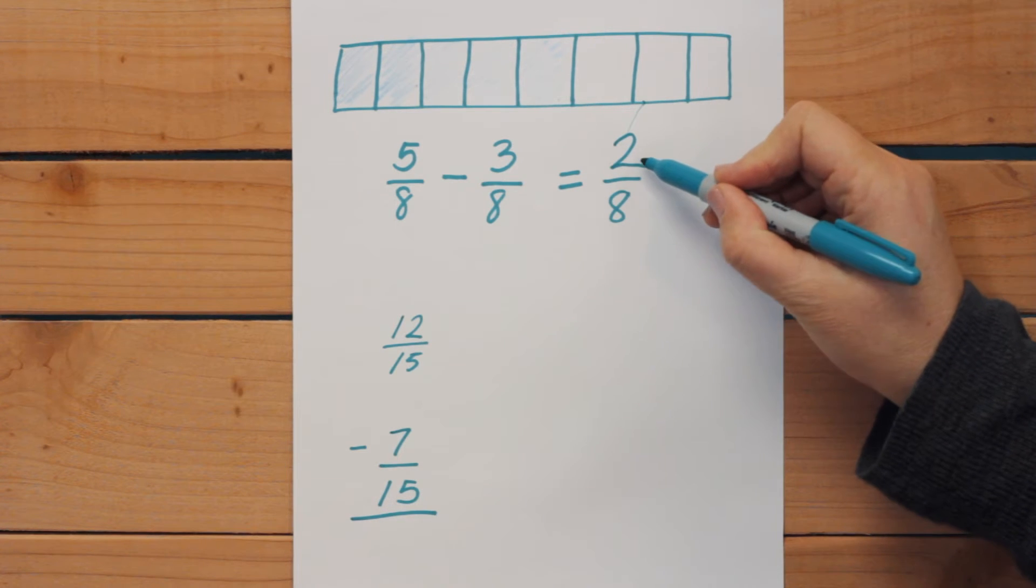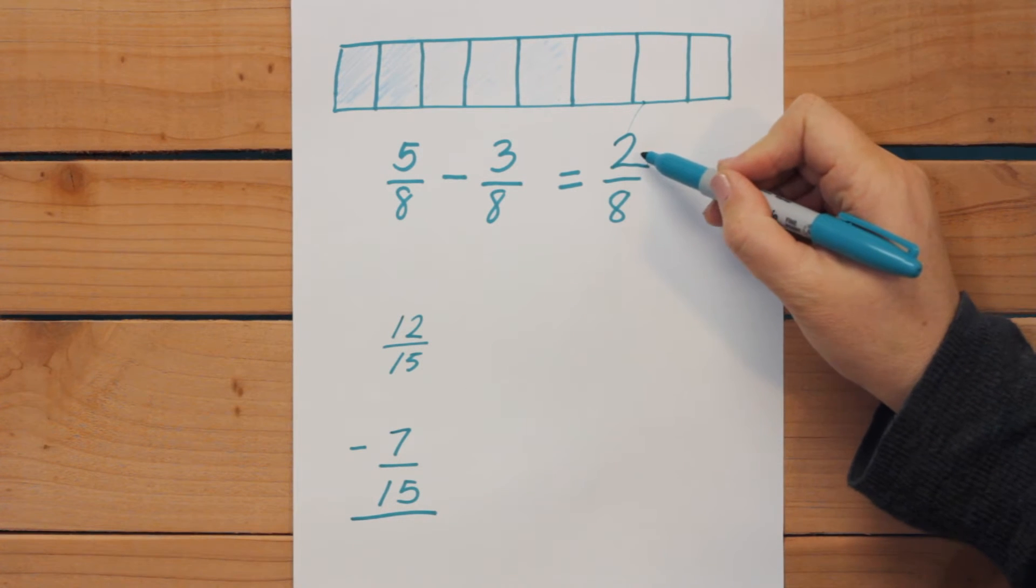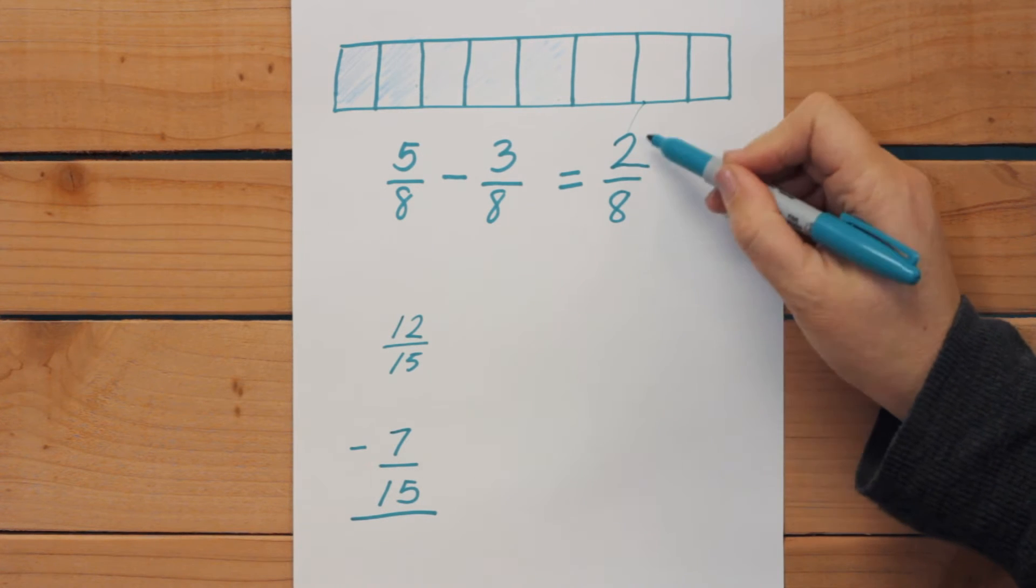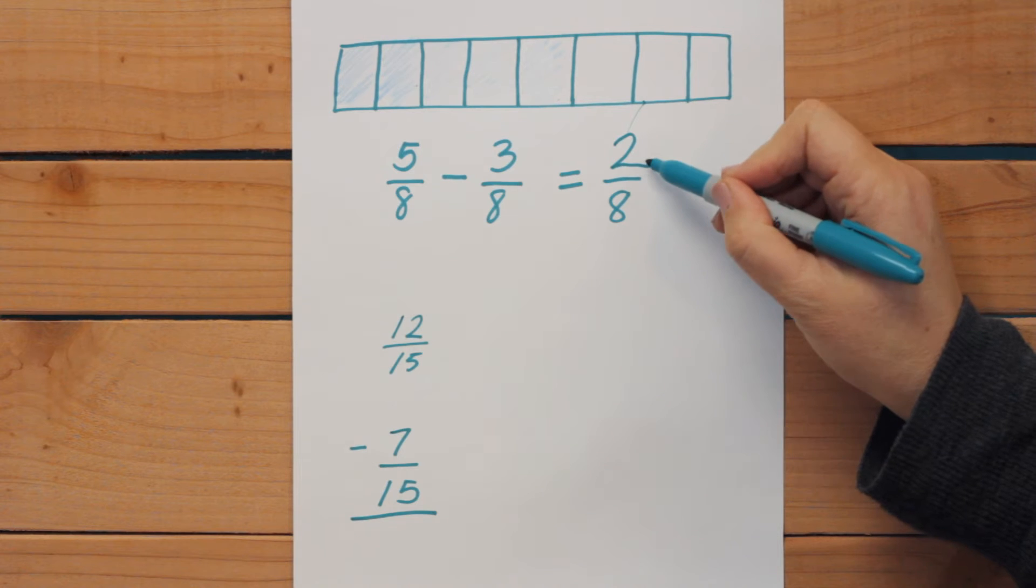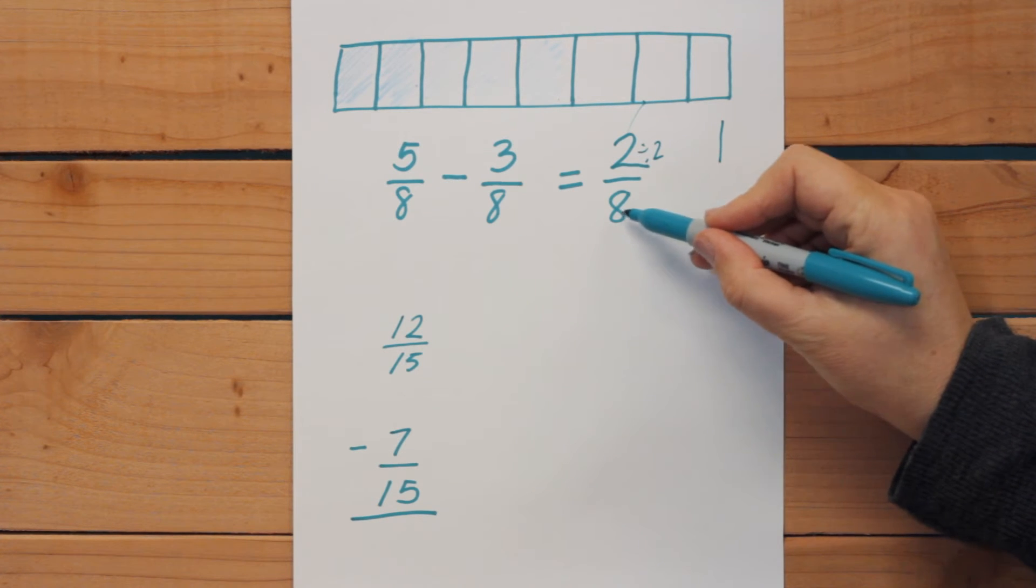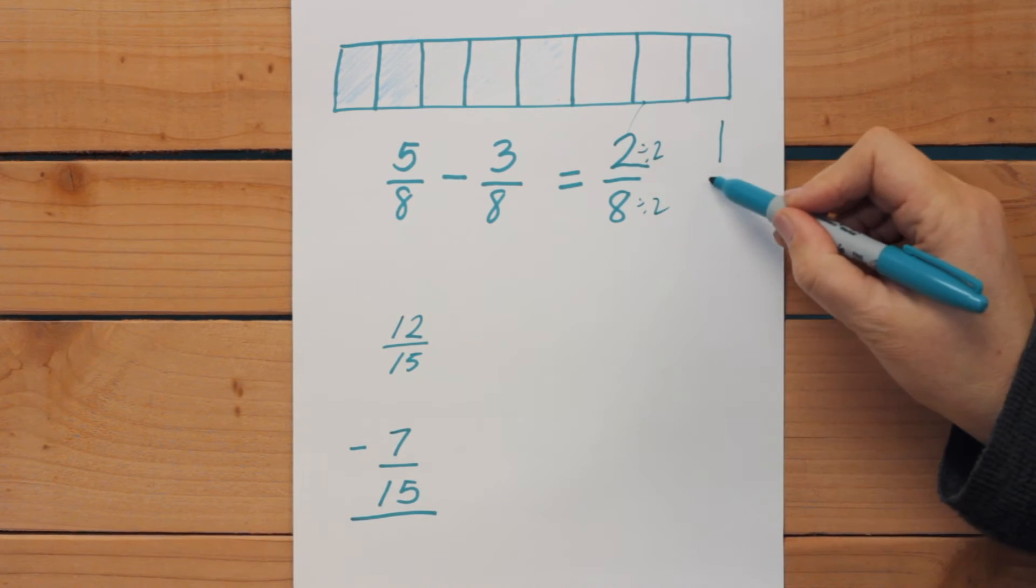When I got to 2/8 I just realized that I can make this in simplest form. What I have to do is I realize these are even numbers and I can divide this by 2 and that gives me 1 and I can divide this by 2 and that gives me 4.